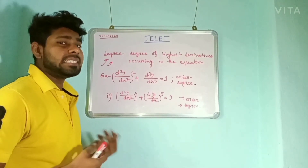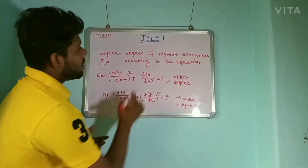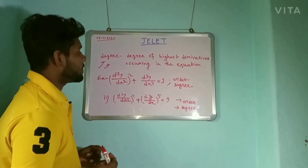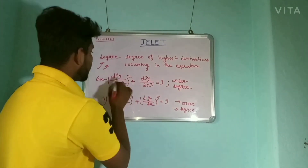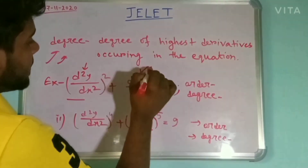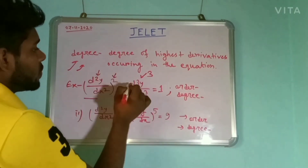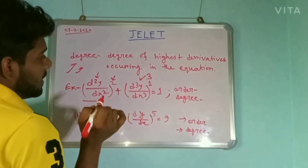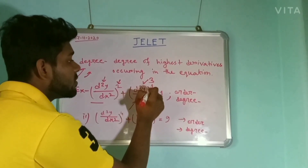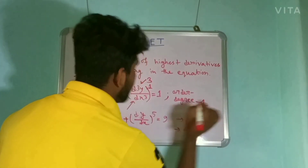Now, what is the degree of a differential equation? By definition, the degree of the highest derivative occurring in the equation is called the degree of the differential equation. For example, if we see the order of a derivative is 2 and another derivative order is 3, then the degree of the highest derivative — whose power here is 1 — gives degree equal to 1, not 2.